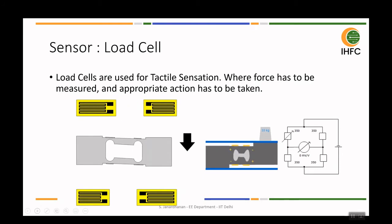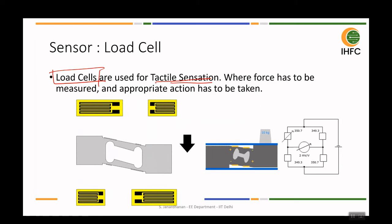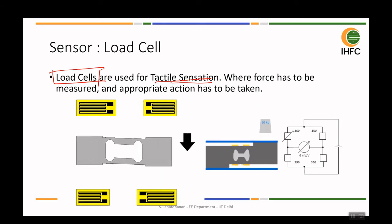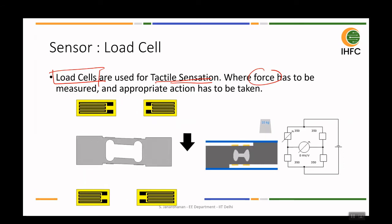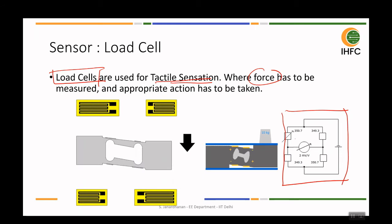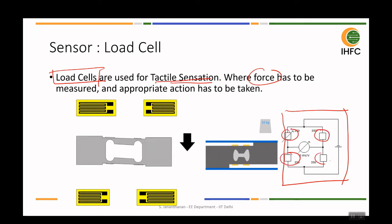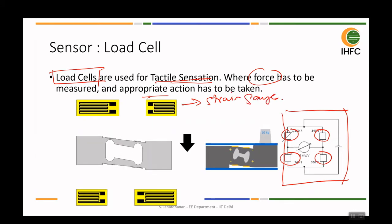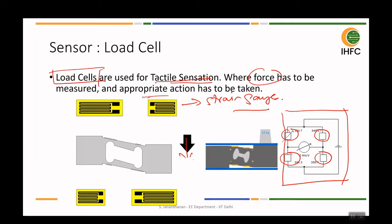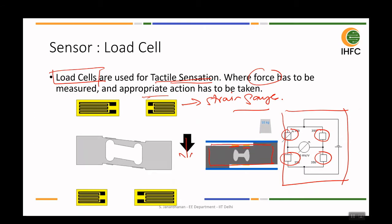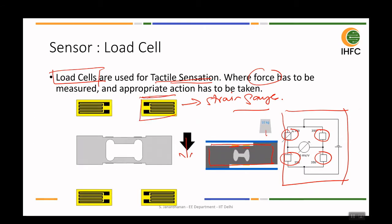For tactile sensation, we use something called a load cell. The force being given by the robot is measured so that an appropriate action can be taken. A load cell is basically an electrical circuit containing resistors called strain gauges. When a force is applied to the element on which the resistors are mounted, it causes deformation in these four resistors — the length of the resistor changes.